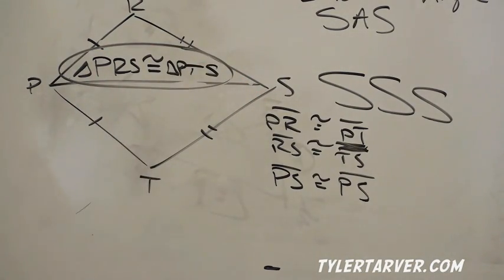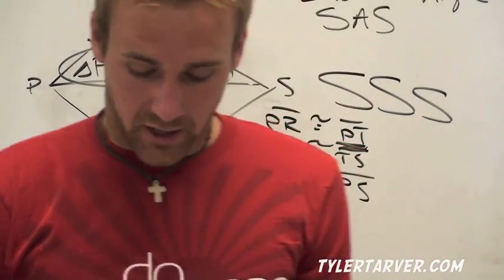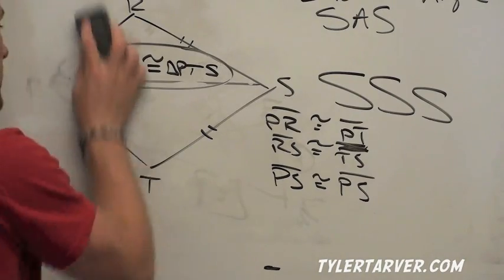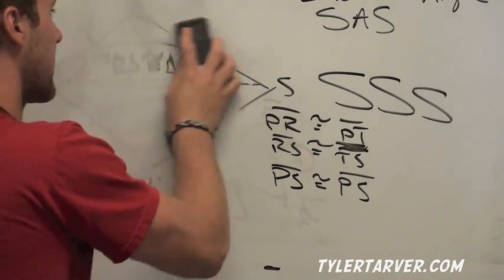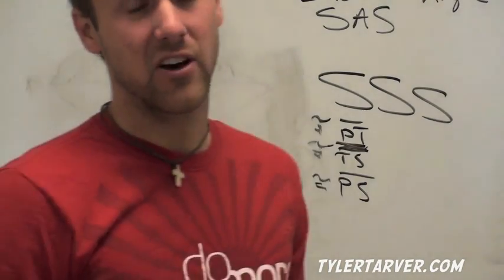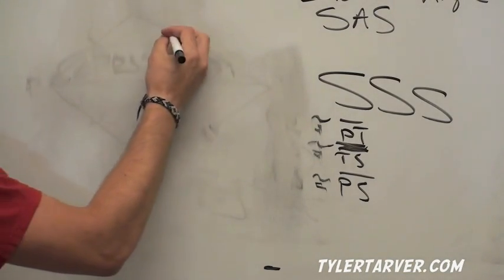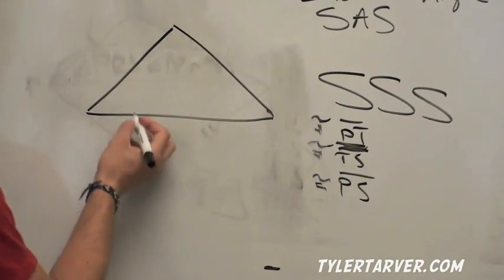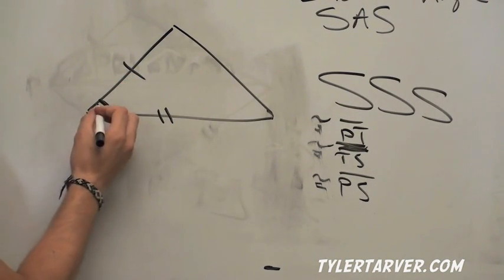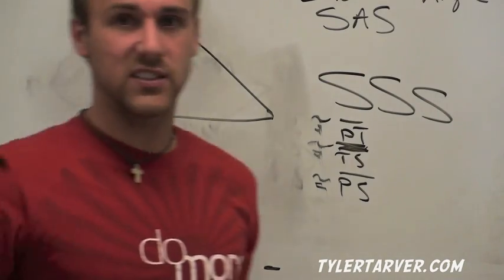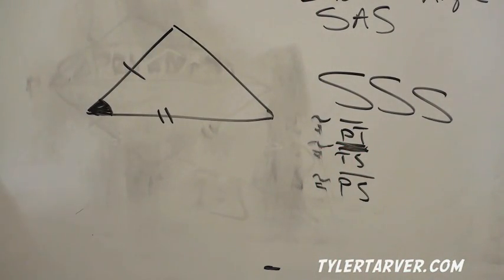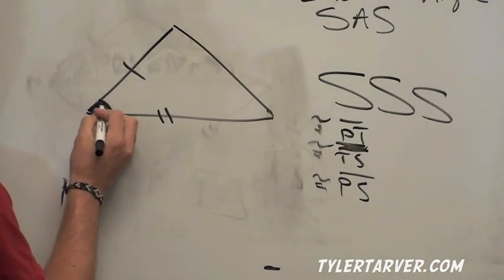Next thing you need to learn is called an included angle. You know when you go to the movies and your mom's like, make sure you take your little brother, make sure you include him? An included angle is the angle that is included between two sides, right there. You include your little brother, he has to sit between you and your friends so he doesn't wander off and eat popcorn and hit on your girlfriend or whatever. Included angle is between the two sides.